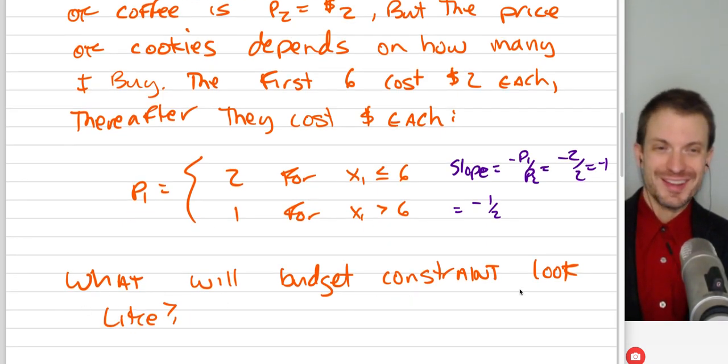So the first thing I'm going to do is identify what this thing is asking us to do. What's the budget constraint going to look like? Well, before I do that, I'm going to first visualize. I'm going to think about what the slopes are of these two portions.